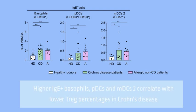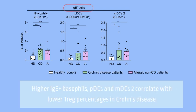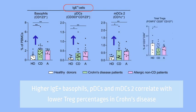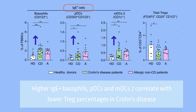Moreover, there were significantly higher percentages of IgE-positive circulating basophils, plasmacytoid dendritic cells, and myeloid dendritic cells type 2 in Crohn's disease patients than in healthy donors, and similar to allergic patients, together with significantly lower percentages of regulatory T cells in Crohn's disease patients.